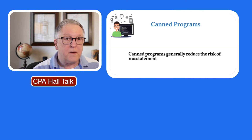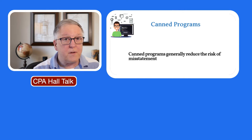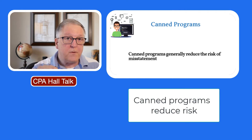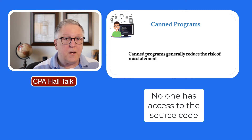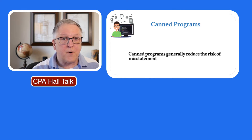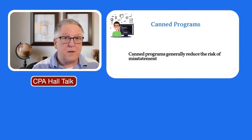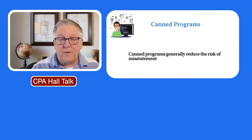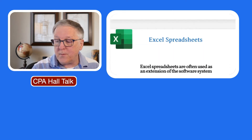If you have an audit client that only uses QuickBooks and really not much else, then the documentation in relation to IT can be fairly simple. Can programs bring the risk of material misstatement down? Nobody has access to the source code, so there's no fear that somebody's playing around with that code to manipulate numbers or commit fraud, and it also lessens the possibility that error might be introduced. A good IT setup brings down the risk in the audit, at least from an IT perspective.